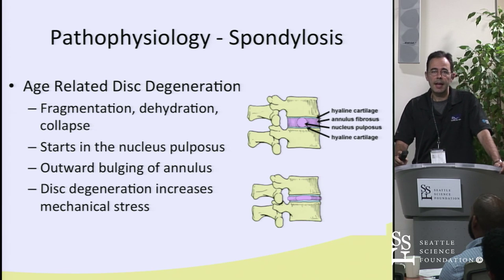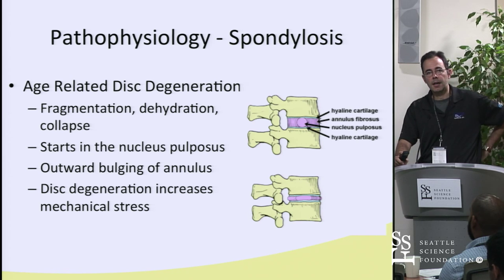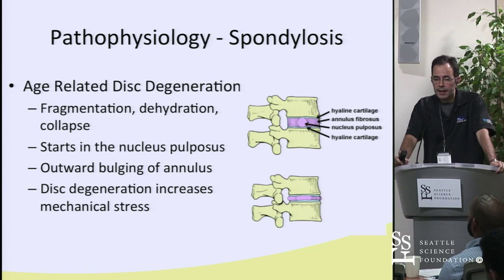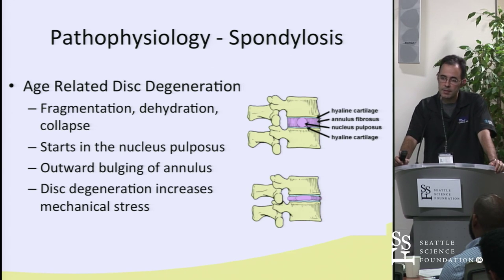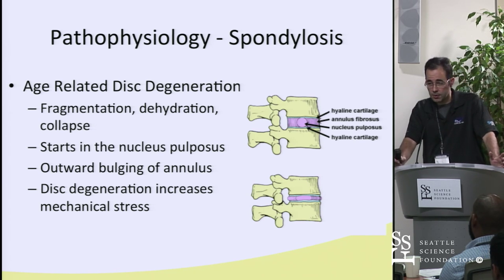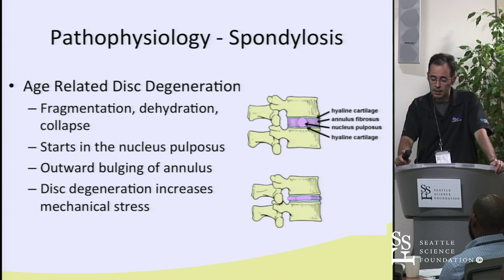Active spondylosis results from dehydration and collapse of the disc base, starting at the nucleus pulposus, leading to bulging of the annulus, mechanical stress, and disc degeneration. Critically, bone grows in the direction of the disc — when a disc bulges, bone above and below grows that way, forming osteophytes. Disc-base collapse directly results in bone remodeling that follows the direction of disc migration.